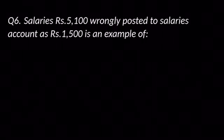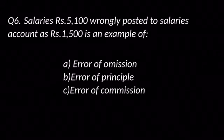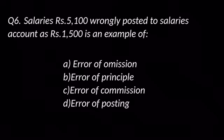Question number six: Salaries Rs. 5,100 wrongly posted to salaries account as Rs. 1,500 is an example of — options are: A. Error of omission, B. Error of principle, C. Error of commission, and D. Error of posting. The answer is C: Error of commission.